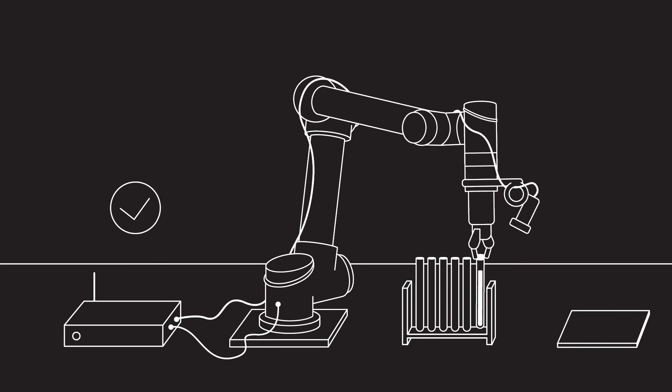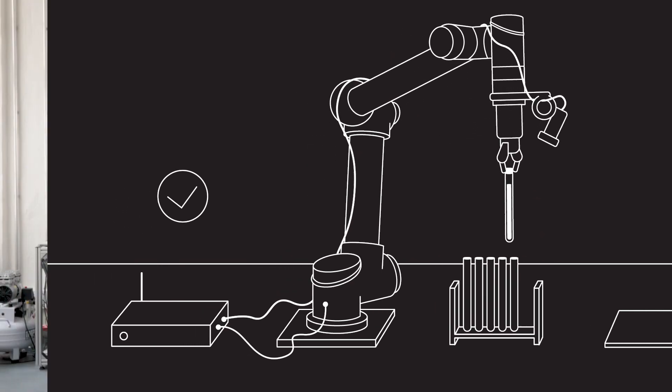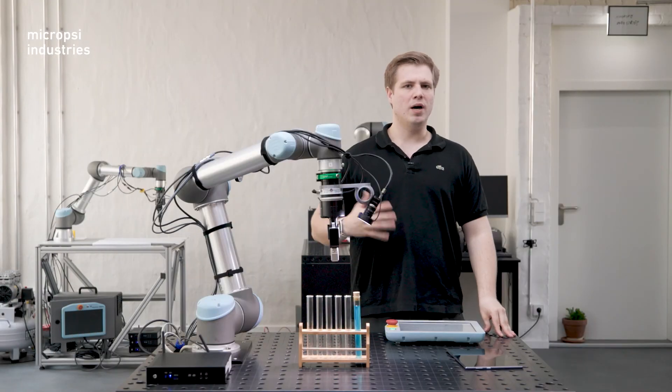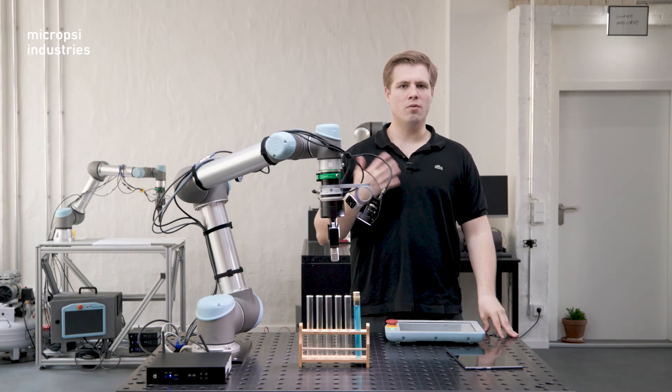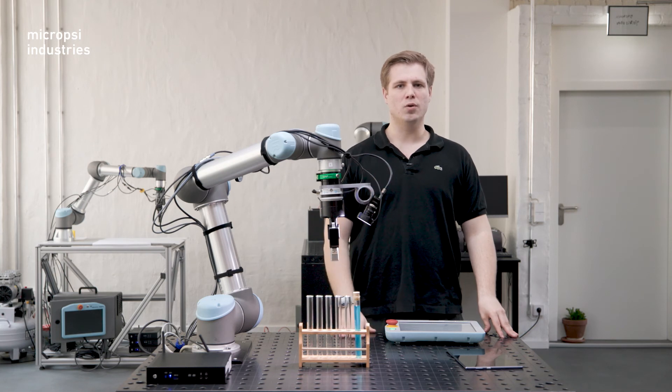You've taught your robot the picking skill. You can now use the Mirai skill as part of the overall pick-and-place task. If you have, for instance, a UR robot, this marriage is made in your PolyScope. Let's look again at the broader task.